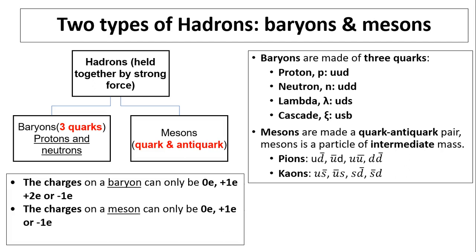There are two types of hadrons, baryons and mesons. Baryons are held together by strong force. Baryons have three quarks and mesons are made up of a quark and anti-quark pair. The two very famous baryons are protons and neutrons. The charge on a baryon can only be four choices: zero, positive one, positive two, or negative one. On the other hand, the charge on a meson can only be zero, positive one, or negative one. So there's three choices for meson and four choices for baryon.